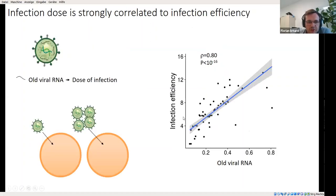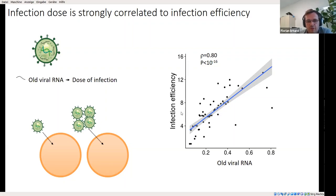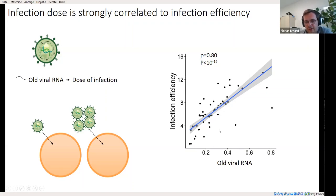Our data tell us a lot about short-term changes in gene regulation. But what about our original goal — can we relate the state of each cell at the time of infection to the infection outcome? One factor that might be important is the infection dose per cell. We can use unlabeled viral RNA for that, and it was strongly correlated to infection efficiency, indicating that the dose of infection is an important driver of outcome — and this is basically the first example of dose-response analysis done in single cells.